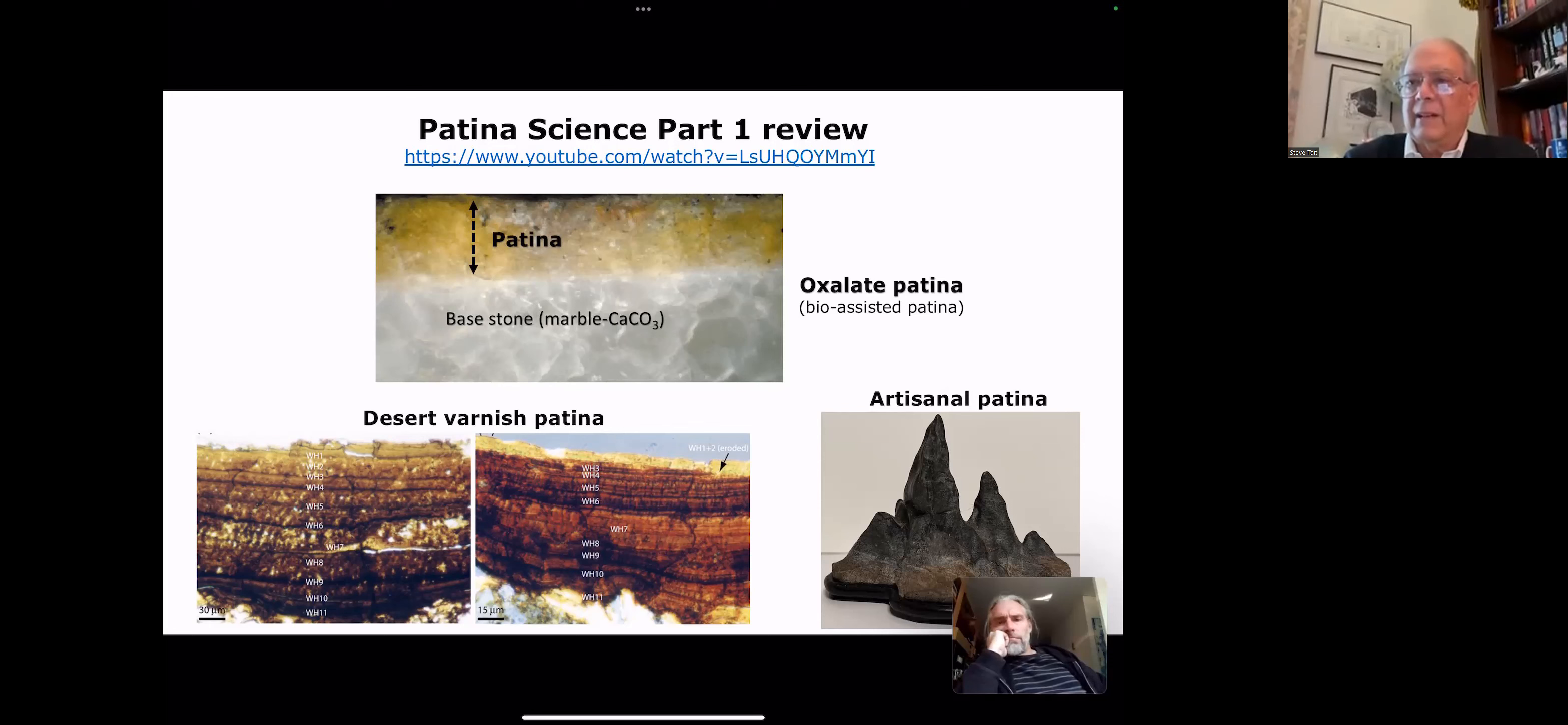We also talked about artisanal patinas. This is an example from our collection. We bought it from an estate, I think it's about 125 years old. We believe this is sculpted, the base stone. Interestingly enough, Hiromi pointed out that this lighter base here with the darker top is typical of the Japanese Edo period.